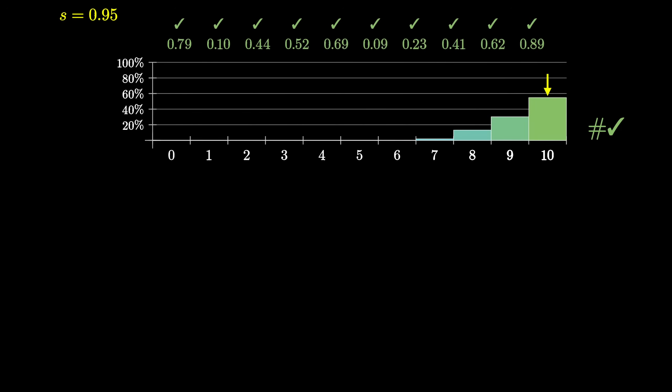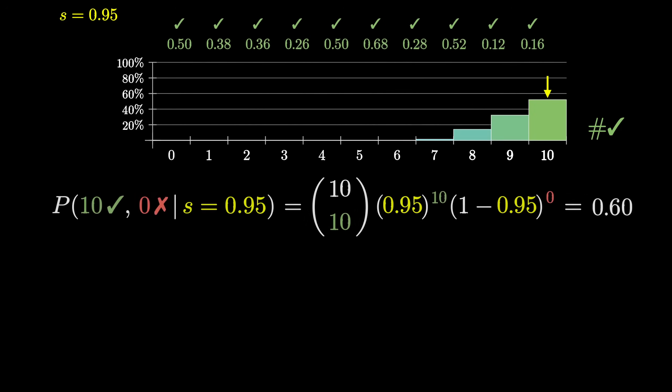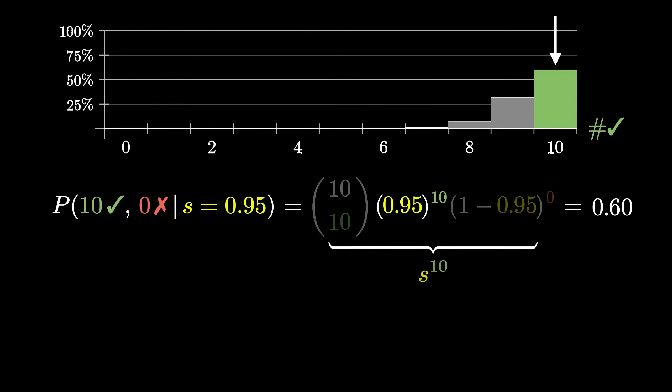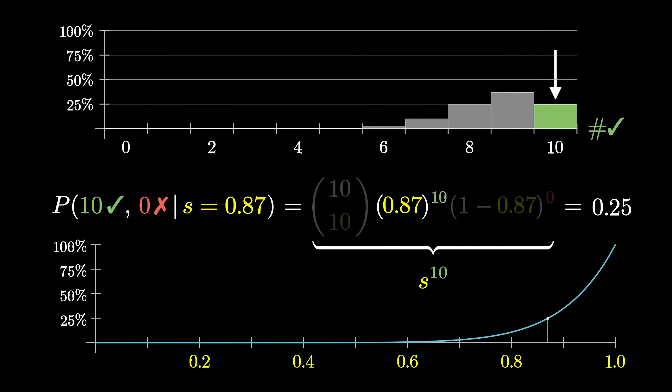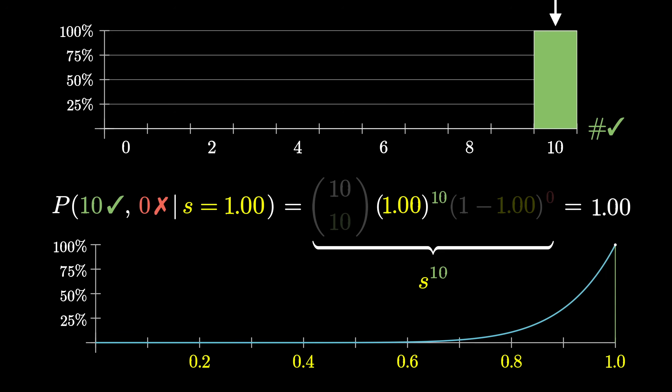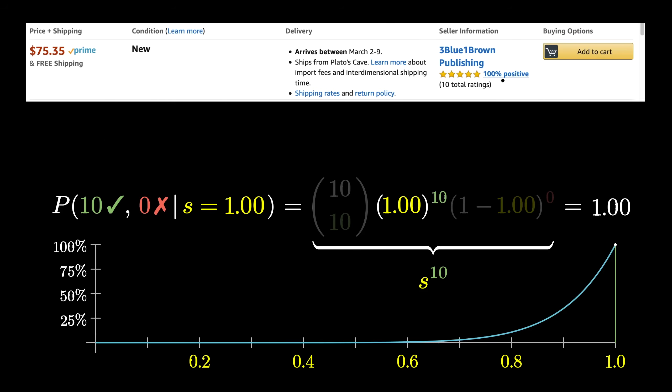But think of the example with 10 out of 10 positives. In that case, the whole binomial formula simplifies to be s to the power 10. The probability of seeing 10 consecutive good reviews is the probability of seeing one of them raised to the tenth. The closer the true success rate is to 1, the higher the probability of seeing a 10 out of 10. Our plot on the bottom only ever increases as s approaches 1. But even if s equals 1 is the value that maximizes this probability, surely you wouldn't feel comfortable saying that you personally have a 100% probability of a good experience with this seller.